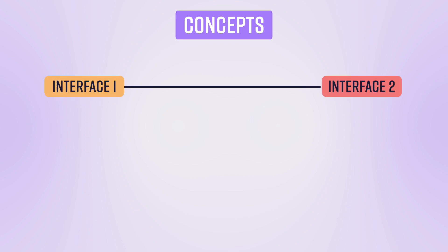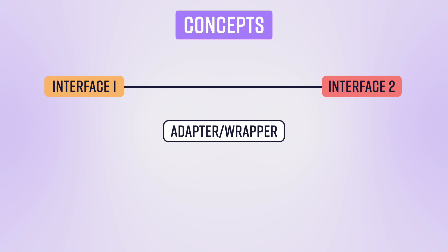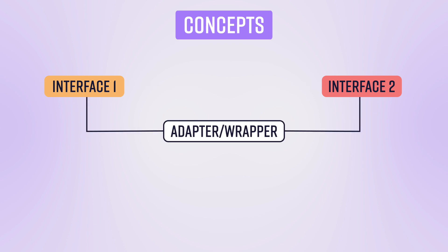So I have come up with a different analogy to explain the same to you. But before we jump onto that analogy, let's try to understand the concept. The concept is that you have to connect two interfaces which are not compatible with each other, and in order to do so, you write an adapter or a wrapper so that both those interfaces can understand each other.